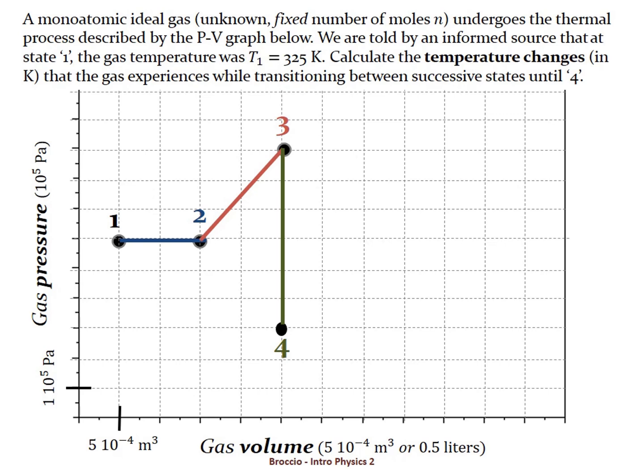Please note the scale of the graph. We are told by an informed source that at state 1 the gas temperature is T1 equals 325 kelvins. Calculate the temperature changes in kelvin that the gas experiences while transitioning between successive states until state 4.